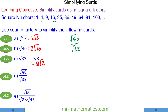Moving on to question d, we have the square root of 40 — which we've worked out as 2√10 — over the square root of 32, which is √16 × √2, giving 4√2. So the expression is 2√10 over 4√2.